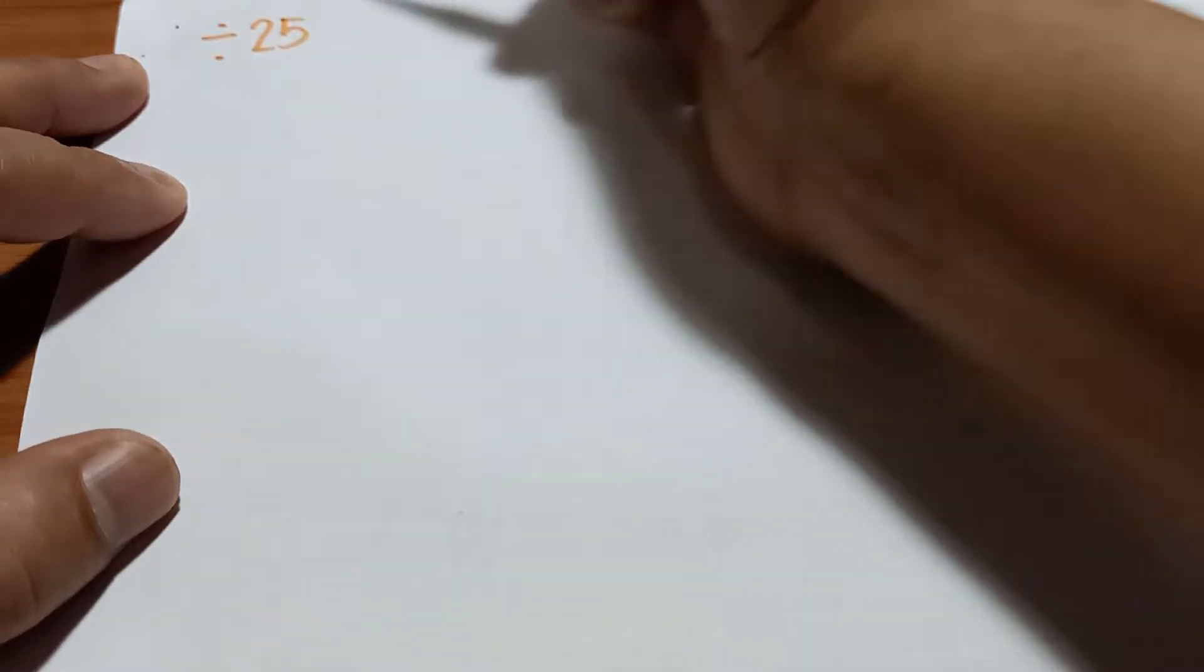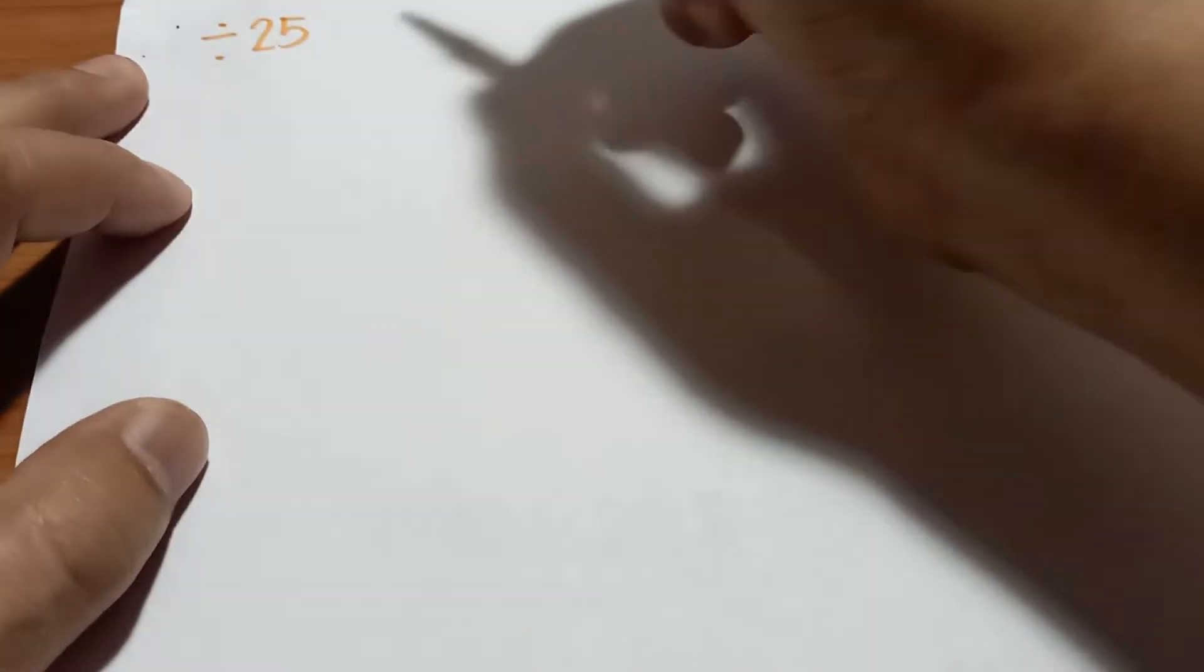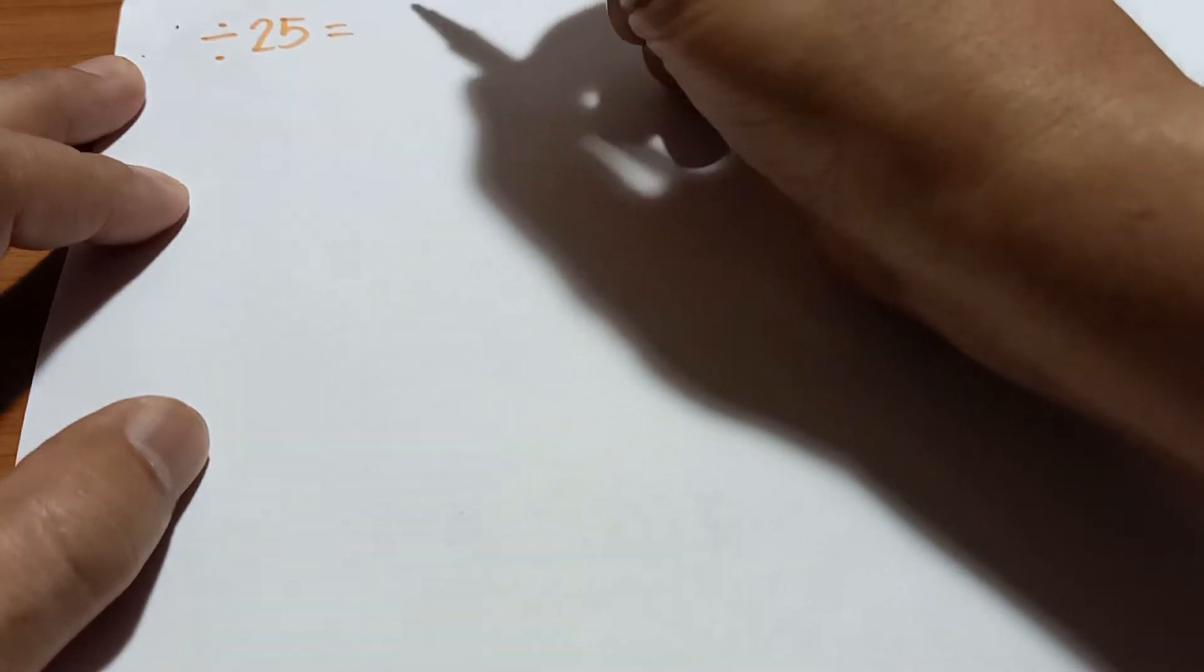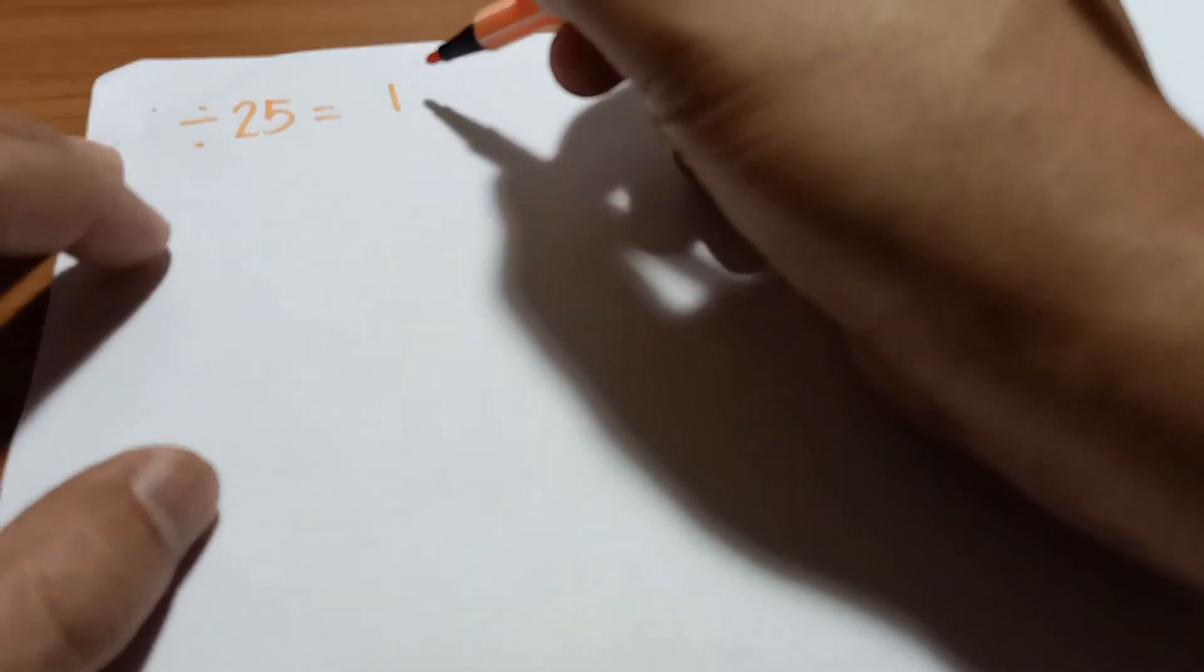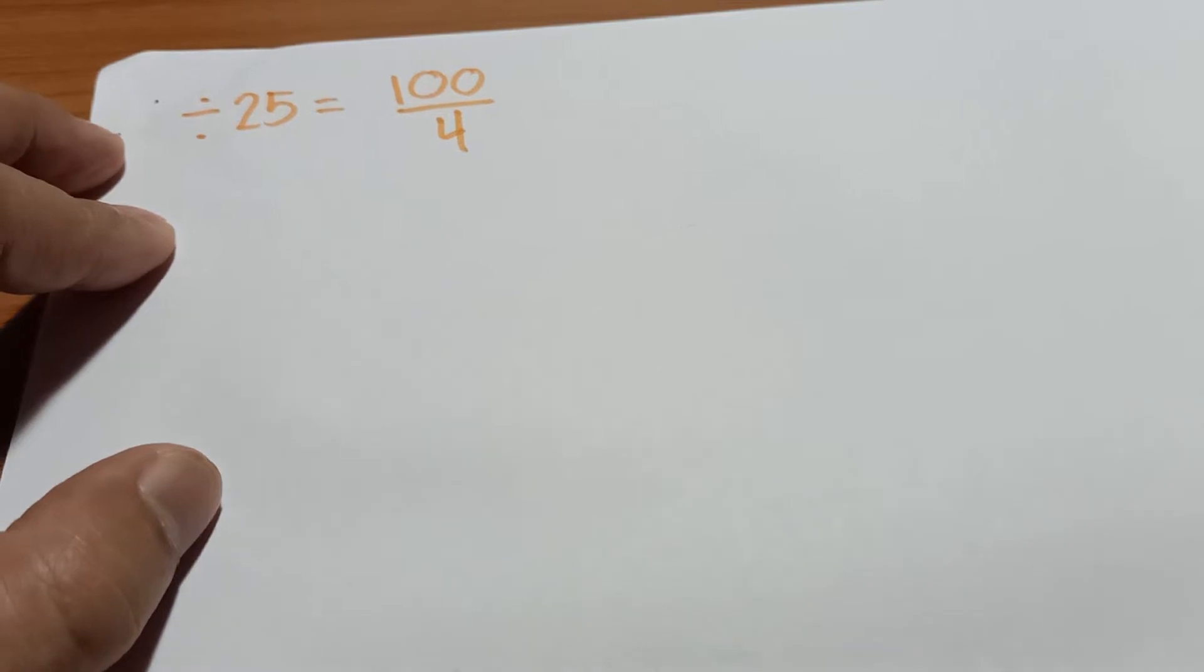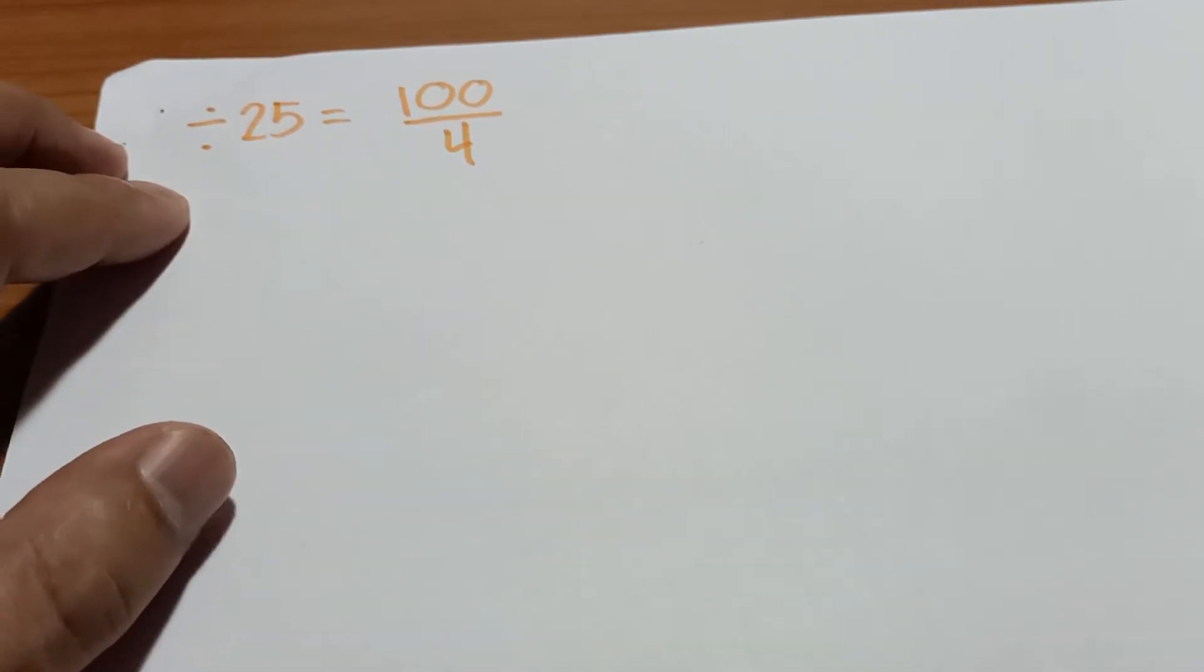In dividing a number by 25, divided by 25 is equal to 100 over 4. So divided by 25 equals 100 over 4.